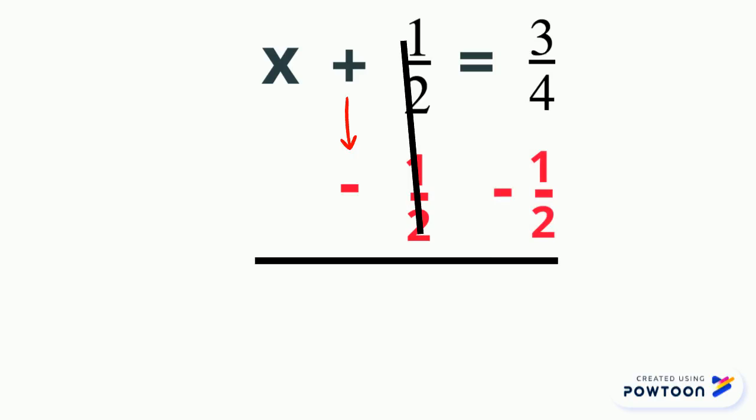That leaves me with x equals whatever 3/4 minus 1/2 is. To do that operation, we must first have like denominators, so we turn 1/2 into fourths by multiplying the numerator and denominator by 2, which gives us 2/4. Now we can do 3/4 - 2/4, which gives us 1/4. So that leaves us with x = 1/4.